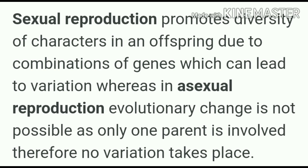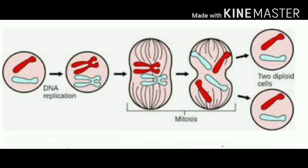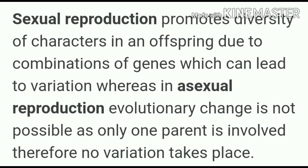Variations help in the survival of a species over time. During asexual reproduction, cells divide and DNA replication takes place. DNA replication is the process of producing two identical copies of DNA from one original DNA. At the time of replication, some variation may occur, but this variation does not usually cause any drastic change. So in asexual reproduction, offspring are more or less similar to the parent and variation is slow.